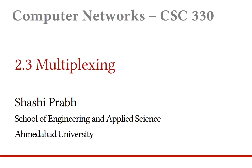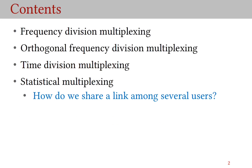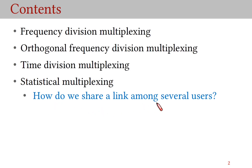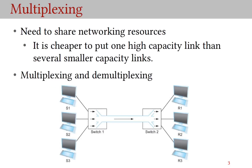Welcome back. In this video we will discuss multiplexing. We are going to discuss four kinds of multiplexing: frequency division multiplexing (FDM), OFDM which stands for orthogonal frequency division multiplexing, TDM which stands for time division multiplexing, and statistical multiplexing. By the end of this video you will know how to share a link among several users.